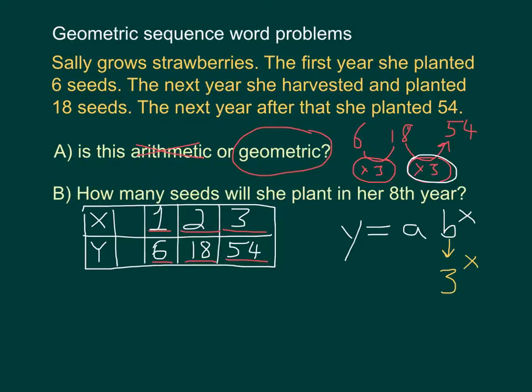To figure out a, I need to know what happens when x equals zero. In order to do that, I look at my table and I say I'm multiplying by three every time. So is there something that I can multiply by three to get six? And the answer is two. So now I can just plug that in for a, and I get y equals two times three to the x.